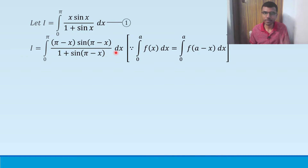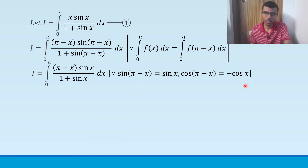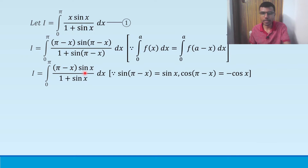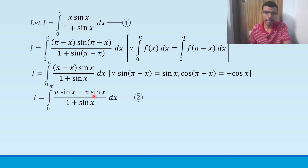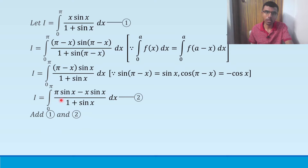Now, sin(π - x) = sin(x) — basic trigonometry. So wherever you see sin(π - x), write it as sin(x). Now expand the bracket: (π·sin(x) - x·sin(x)) / (1 + sin(x)) dx. Mark this as equation 2. Now what you need to do is add equation 1 and equation 2.